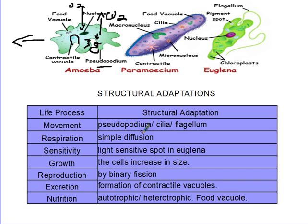In summary: movement by pseudopodium, cilia, or flagellum; respiration by simple diffusion; sensitivity — when they meet anything they don't like, they move in the opposite direction, and the euglena has a pigment spot for sensing light; growth is just an increase in size; reproduction by binary fission. Please take note: excretion is by formation of contractile vacuoles. When asked what is the role of contractile vacuoles, the answer is excretion. The role of food vacuoles is digestion.